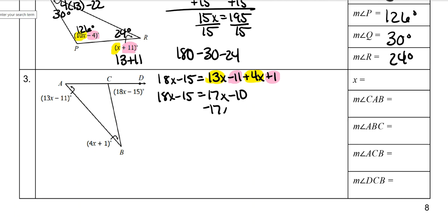Then subtract 17x from both sides. You get x minus 15 is equal to negative 10. Add 15 to both sides. And x is 5.